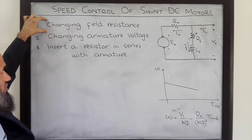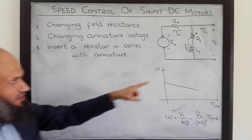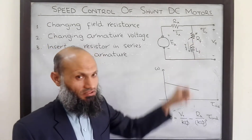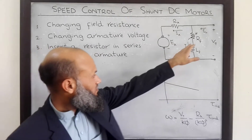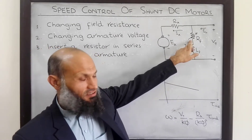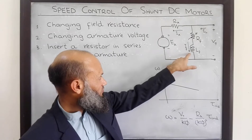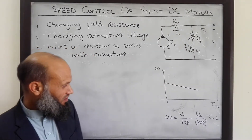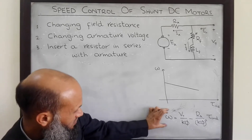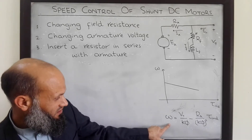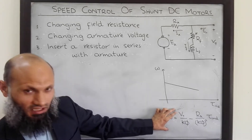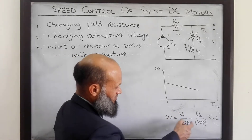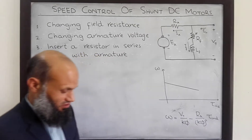The first approach is changing the field resistance. We insert an additional variable resistor in series with the field winding, and by changing this field resistance, the field current is changed, which thereby changes the flux in the machine. We can see from the torque-speed characteristics equation that by changing the flux in the machine, this line is changed.